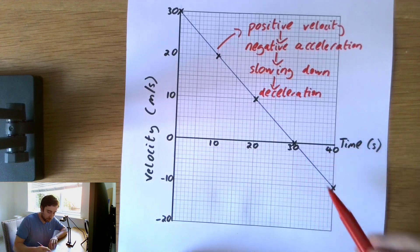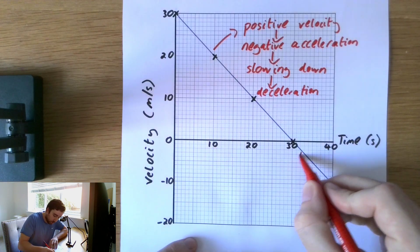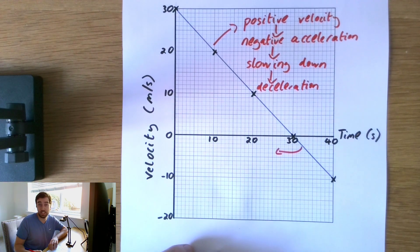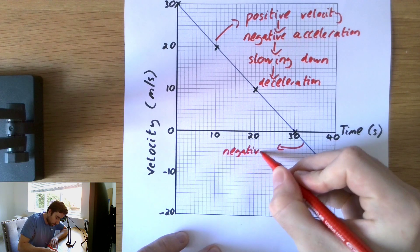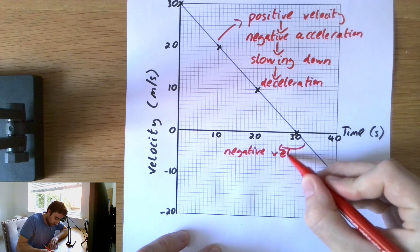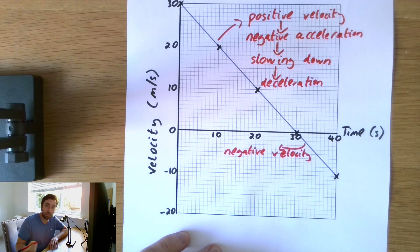However, the force continues being applied here in the same direction. Now, in this part, we've now got to the stage where we have now a negative velocity. The object's going backwards now.